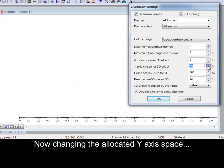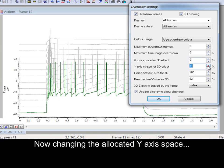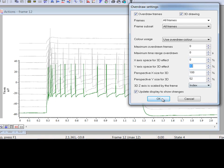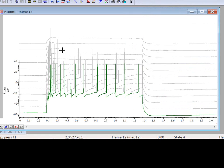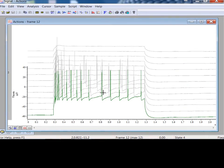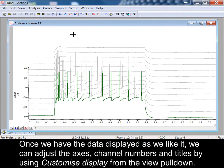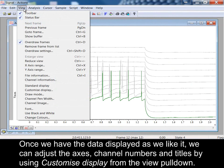Now changing the allocated Y-axis space. Once we have the data displayed as we like it, we can adjust the axes, channel numbers and titles by using customised display from the view pull-down.